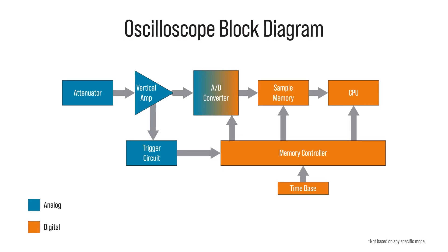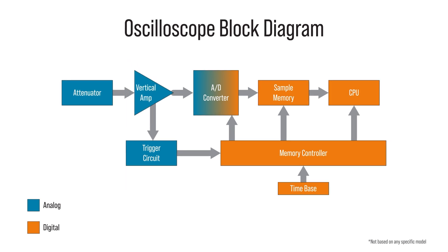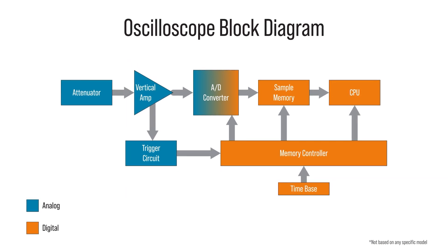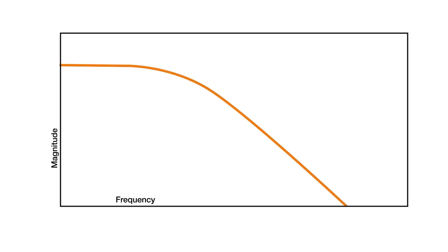Right behind the BNC connector, there is an attenuator stage, which also buffers the signal for the analog-to-digital converter. Like any amplifier, that buffer has a frequency response, which, for oscilloscopes, looks like a low-pass filter.